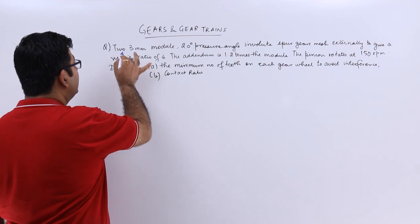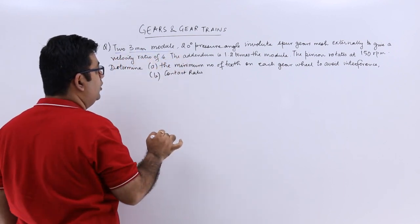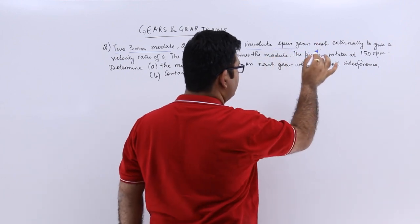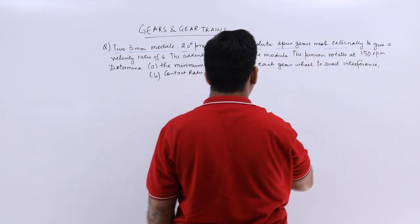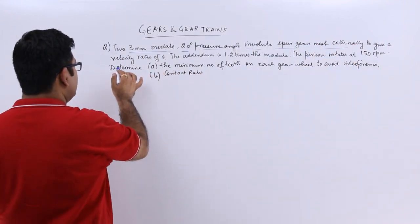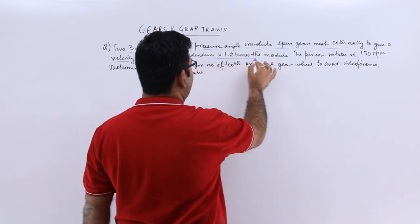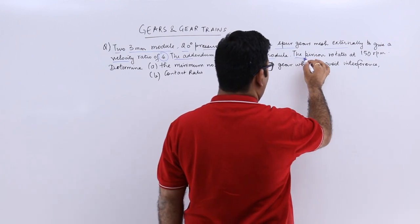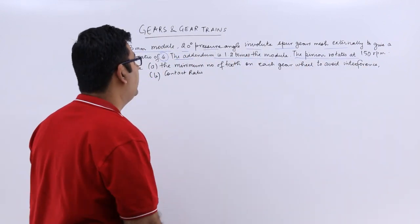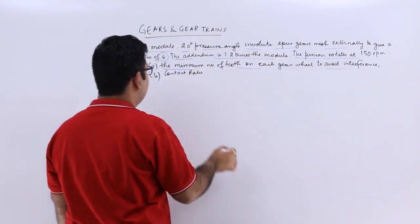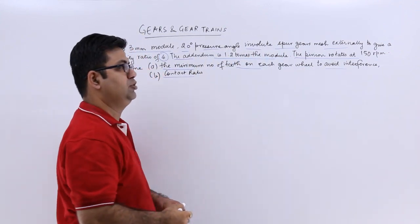The question says we have two 3mm module, 20 degree pressure angle involute spur gears which mesh externally to give a velocity ratio of 4. The addendum is 1.2 times the module. The pinion rotates at 150 rpm. Determine the minimum number of teeth on each gear to avoid interference and the contact ratio.